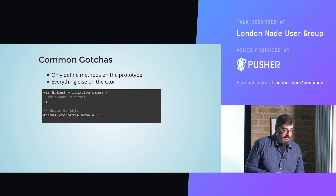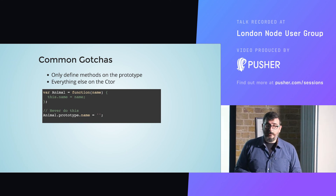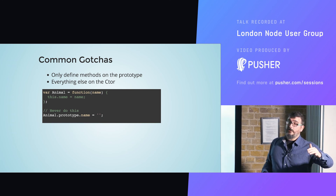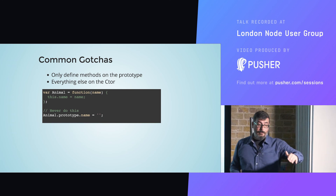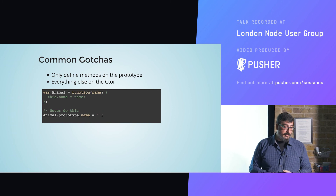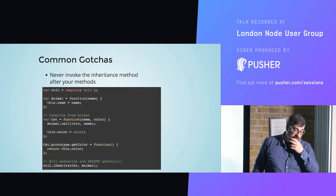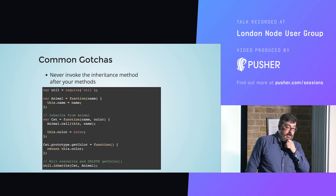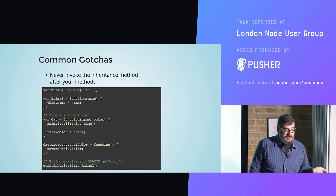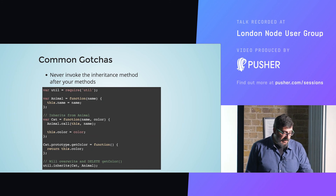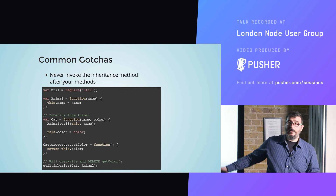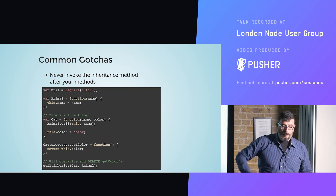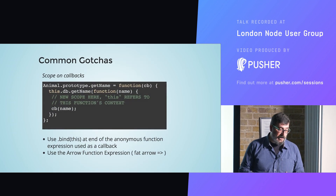Some common gotchas: never define property values on the prototype — always define them within the constructor. That is the purpose of the constructor: to construct the object and assign the properties. If you perform util.inherits at the end of the definition, it's going to override all of your methods and properties, so do it right after the constructor declaration.